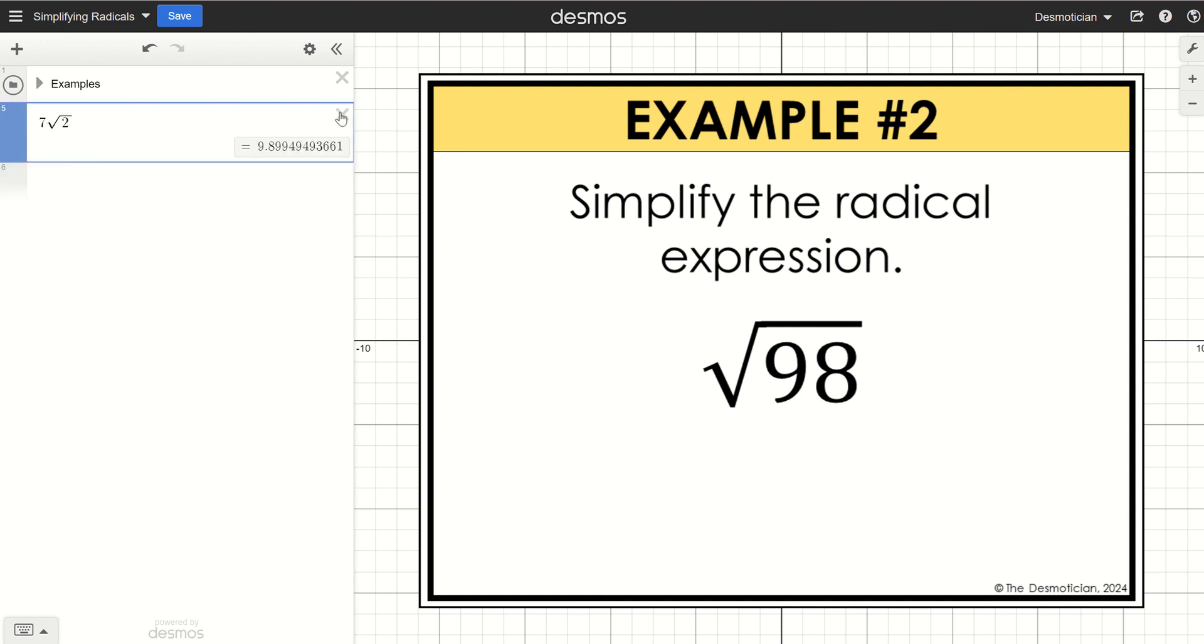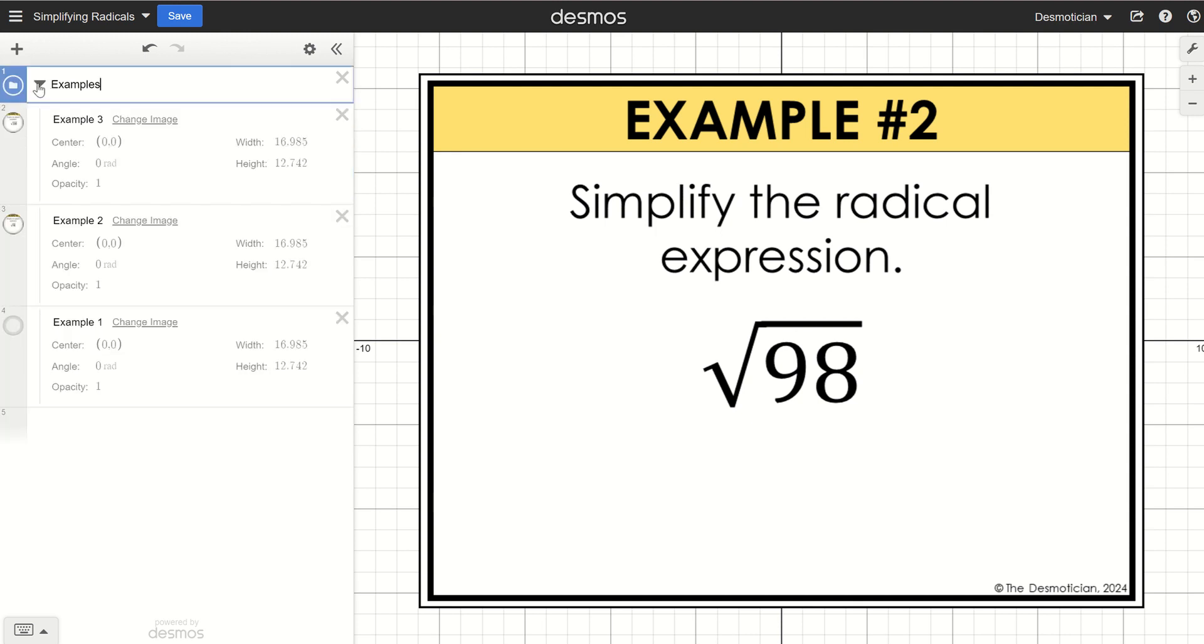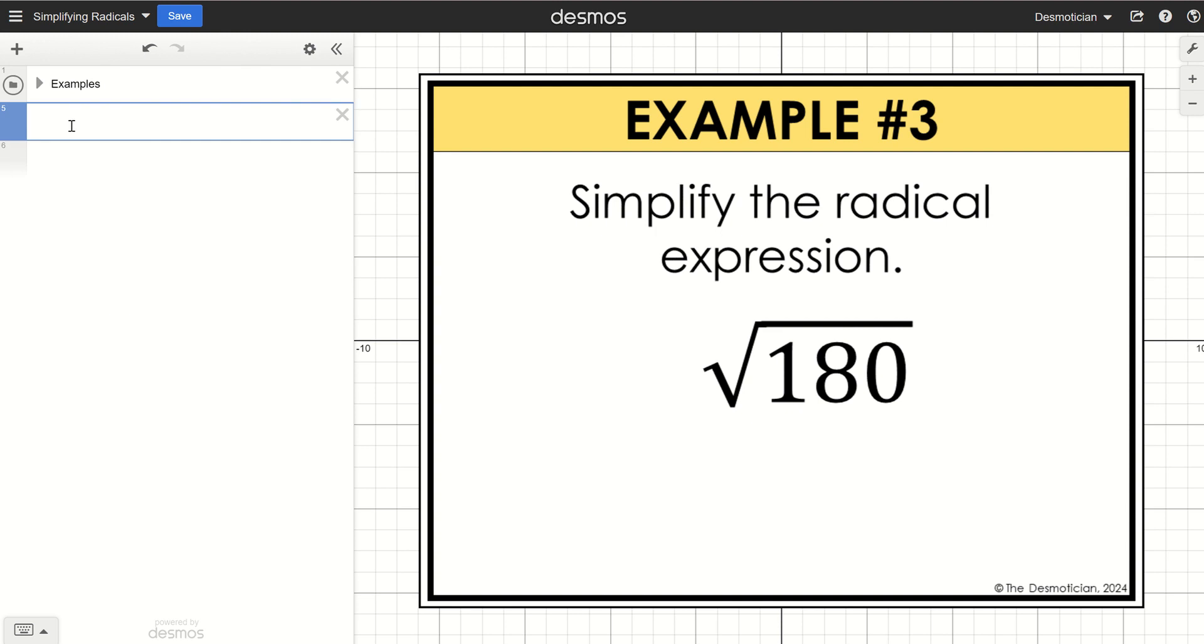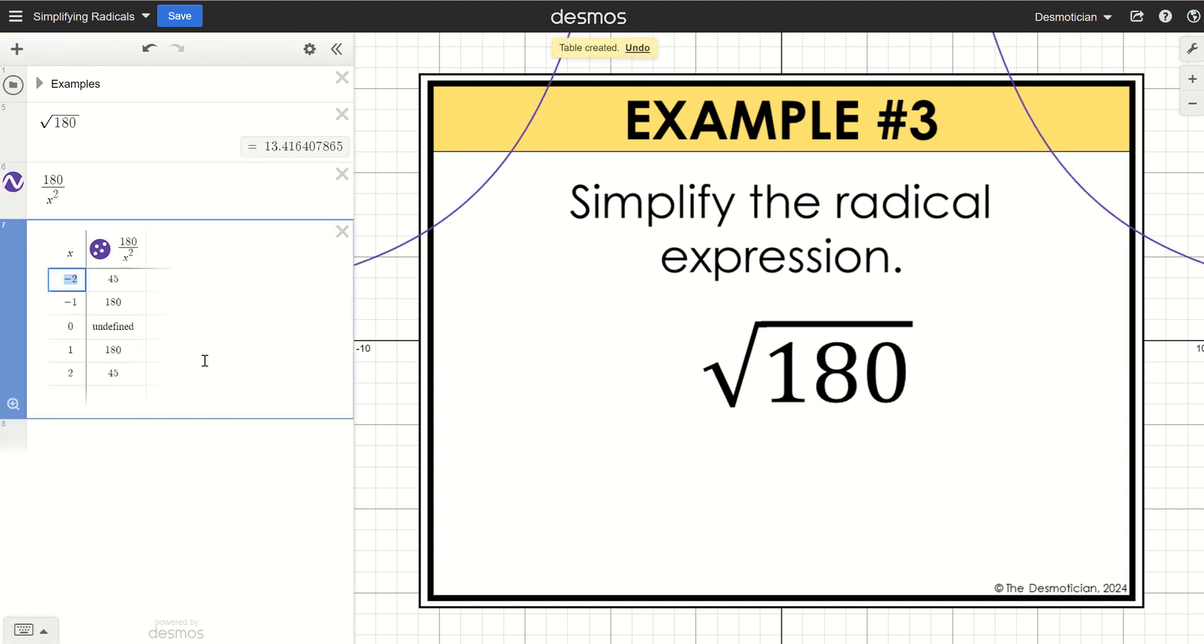Another example. Last one. The square root of 180. So 180 divided by x squared. Use the gear. Change it to a table.